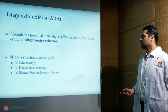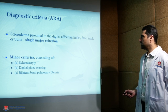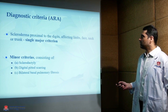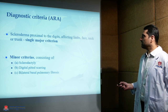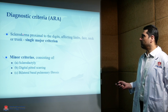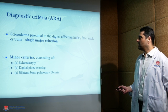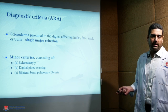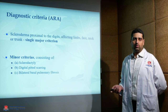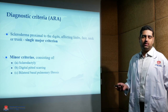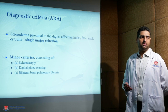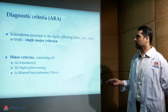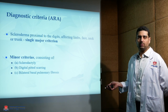Minor ARA criteria include sclerodactyly, digital pitted scarring, and bilateral basal pulmonary fibrosis. To qualify, a patient needed one major and two minor criteria. This has now been replaced by the EULAR criteria, which requires only one single condition — that sclerosis is beyond the metacarpophalangeal joints — to qualify for a diagnosis of systemic sclerosis.